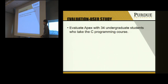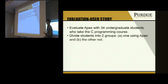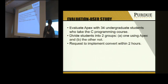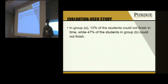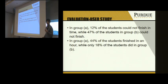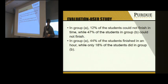To understand the quality of our results, we evaluated our system with 34 undergraduate students, divided into two groups — one using our tool and the other not. In group A using our tool, only 12 percent of students failed to finish within two hours, compared to 47 percent in the other group. Also, 44 percent of group A students finished within one hour, versus only 18 percent in the other group, suggesting our tool significantly improves student productivity.